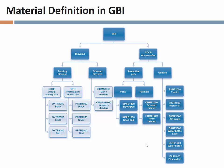Remember the key point about material groups: the textbook definition says groups contain materials with things in common, but in reality a material group is just a group that you define any way you want. You could create a group called 'My Favorite Things' containing a bicycle, a helmet, and a t-shirt. Material groups can be composed of anything, structured in any hierarchy — material types, however, are much more precisely defined.